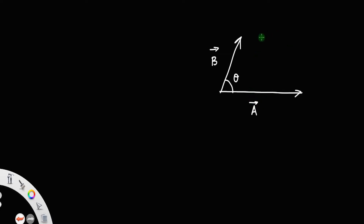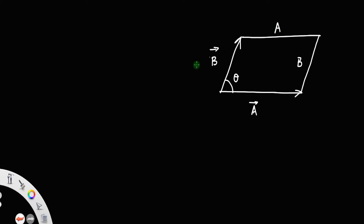To find the resultant, construct a parallelogram such that its sides are the vectors themselves. From the property of the parallelogram, opposite sides are equal, so if one side is b the opposite is also b, and similarly for a. Call this parallelogram LMNO. The diagonal LN is actually the resultant of these two vectors — call that R.